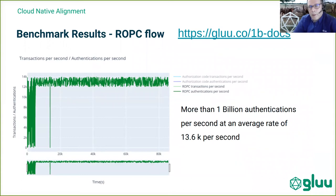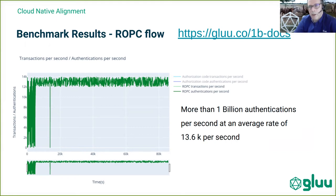A lot of vendors, when they talk about their performance, are really talking about a simple username-password authentication. When we did our benchmarking, we wanted to look at that as well — to see the baseline performance of the Glue server using what we call the Resource Owner Password Credential flow. This is the password grant in OAuth, and it's the simplest flow you can test for performance: you're sending the username and password to the token endpoint, the OxAuth server validates against the database, and returns a response. My experience is that a lot of vendors reporting results are really just reporting results for this simple flow.